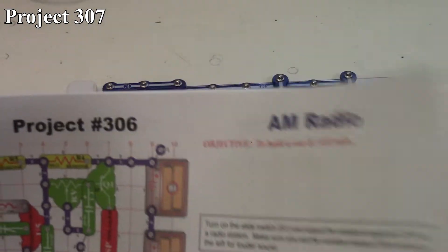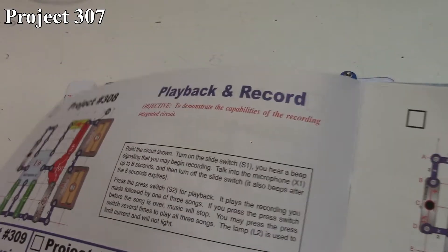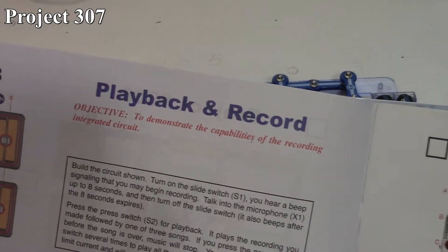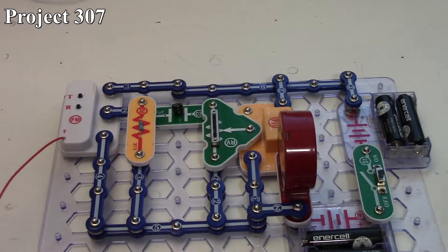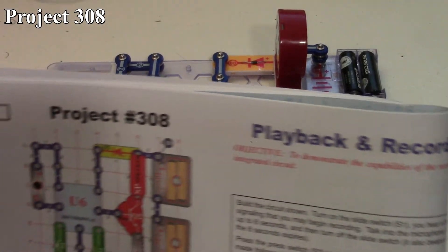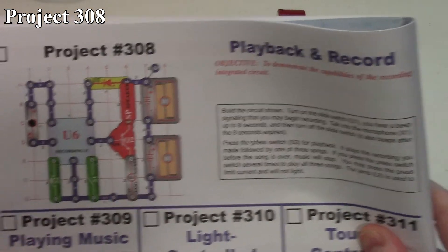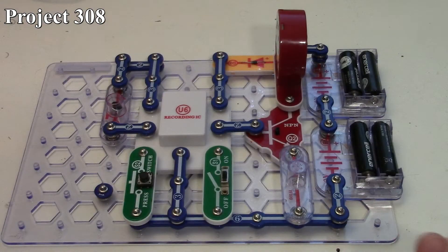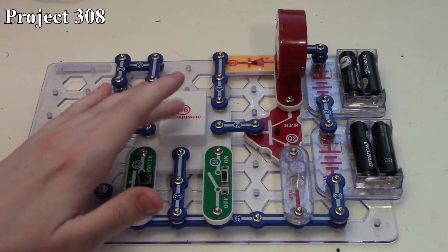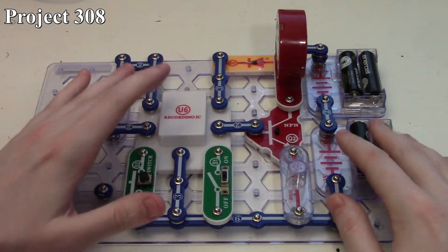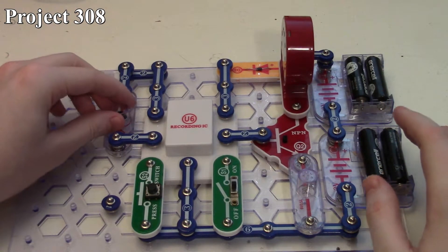Now we're going to move on to project 308 through 311, where we're going to start working with our recording IC. Here we're looking at project 308, which is the playback and record. In this project, we're making use of our recording IC, which serves multiple functions. It takes input from a source, which is our microphone.